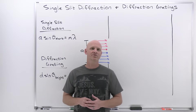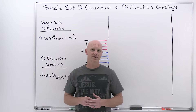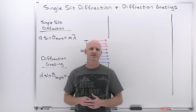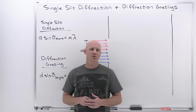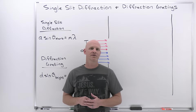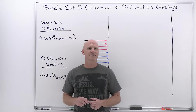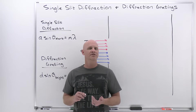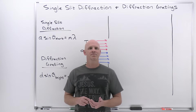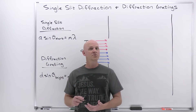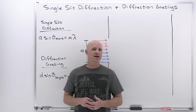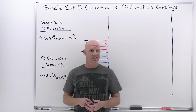Single-slit diffraction and diffraction grating is going to be the topic of this lesson in my new general physics playlist, which when complete will cover a full year of university algebra-based physics. Earlier in this chapter, we looked at Young's double-slit experiment. We saw that light passing through two separate slits has a chance to interfere one with the other.